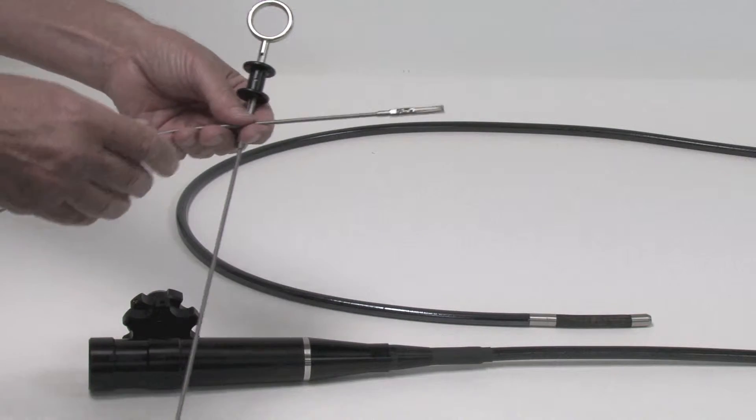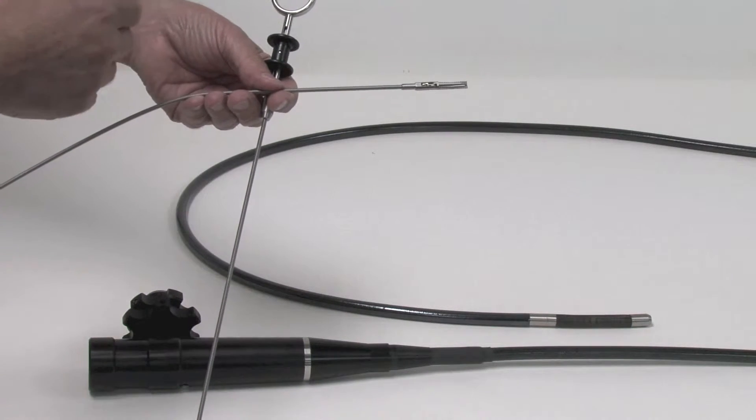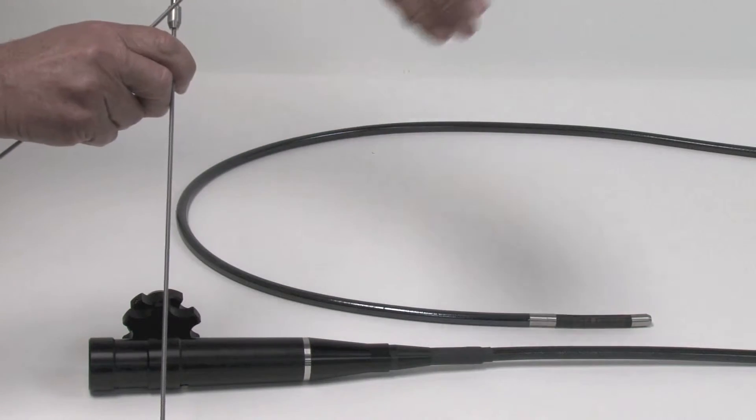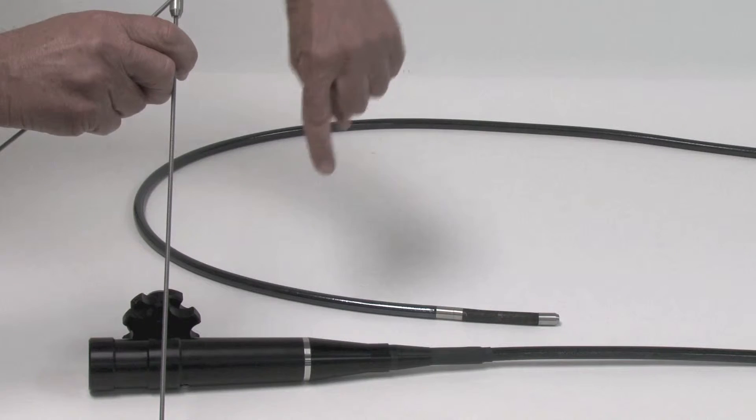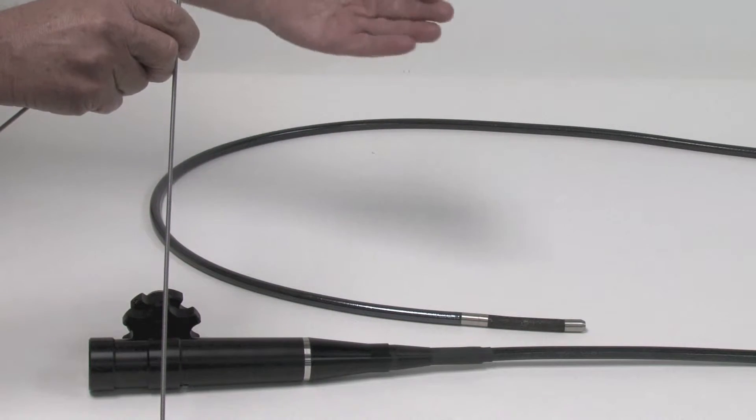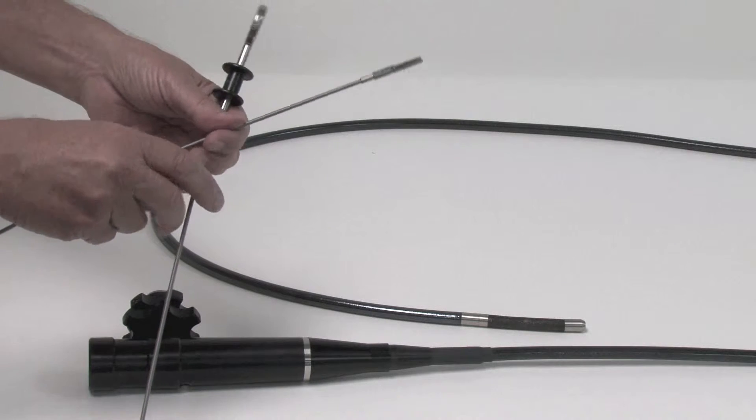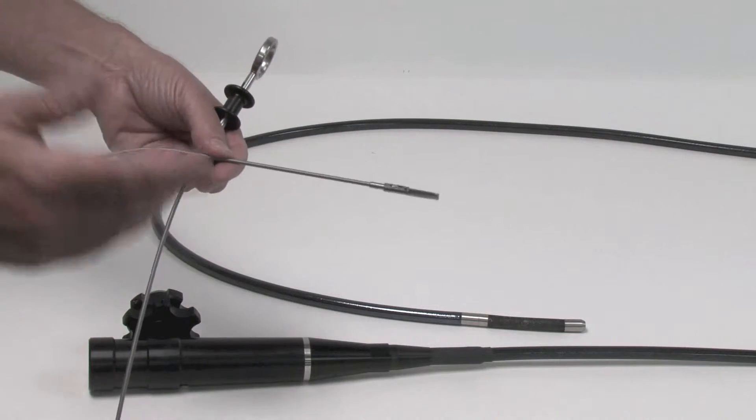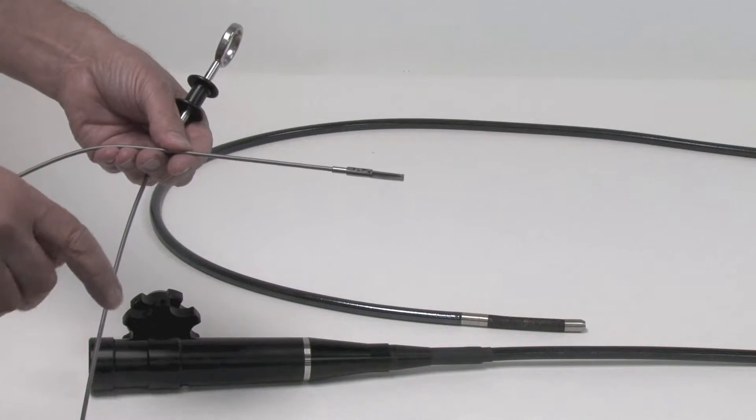What's not shown is off-camera I've laid out the insertion tube in just a lazy arc. Less bends in this is better. If you had multiple bends in it, you're just going to add additional drag in the insertion process. Likewise, with the retrieval tool, I have that off-camera laid out on the floor in a simple large loop.